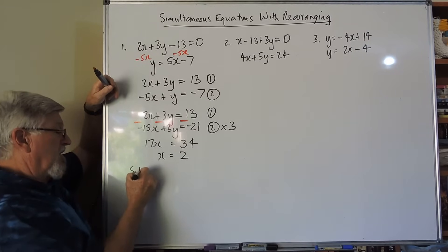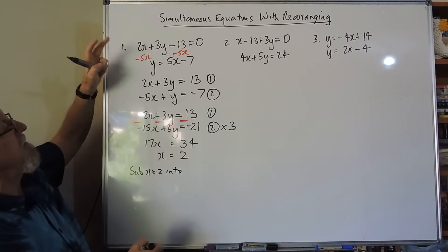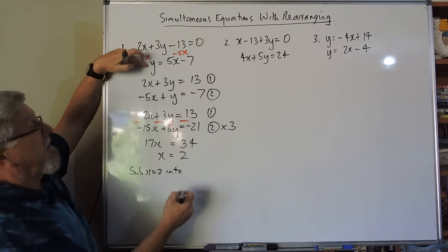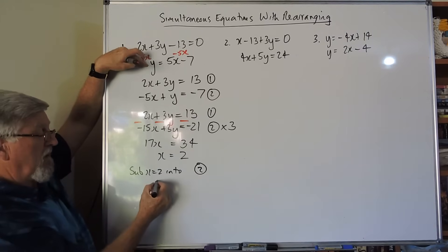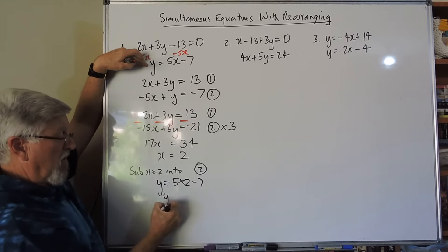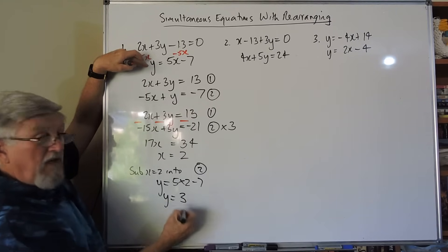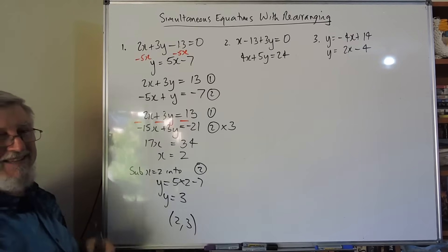Now we're going to substitute x equals 2 into, I'm going to go that one there, into number 2, because it's already written in the correct form. So I'm going to have y equals 5 times the 2 minus 7. So what have I got? 10 minus 7 is 3. So the answer to that one is just 2, 3. Could put them back in and check it and see what happens.